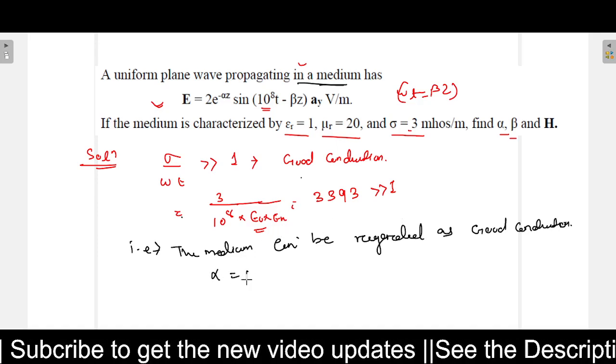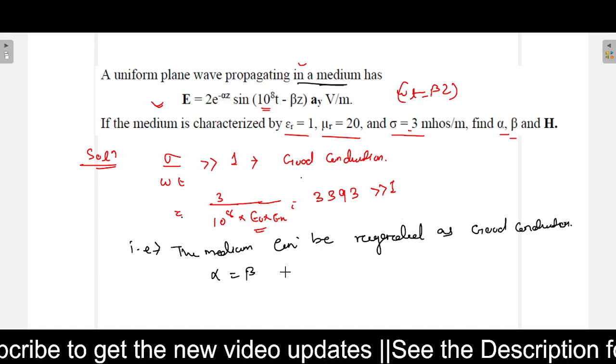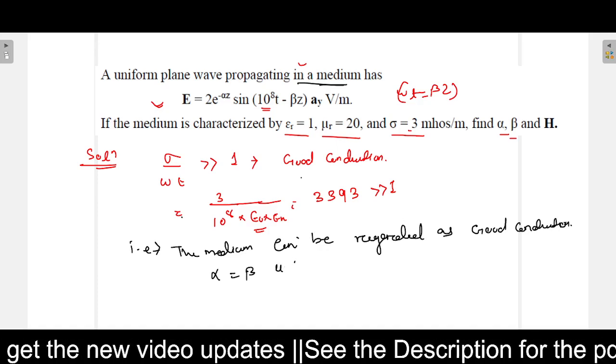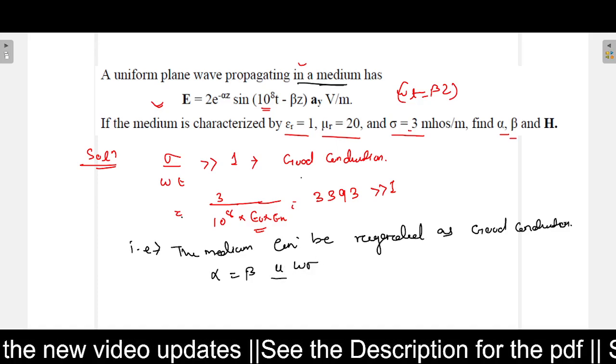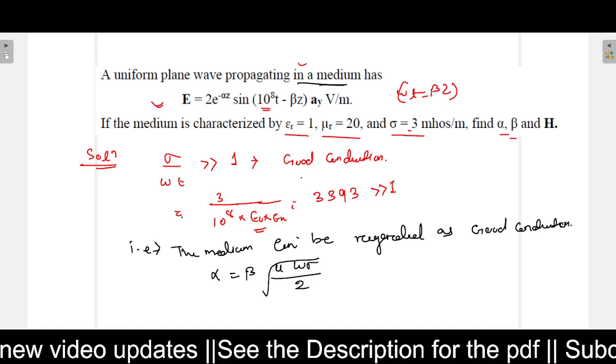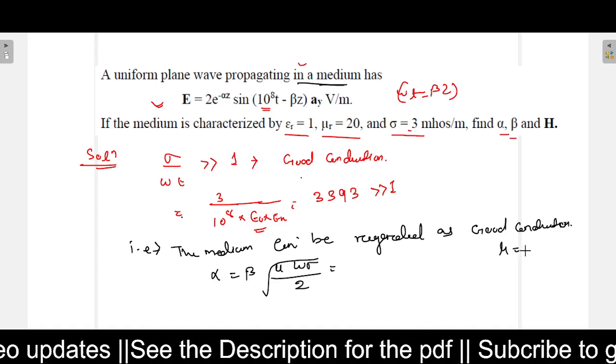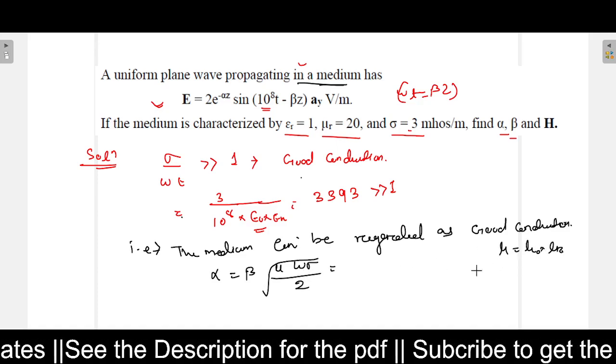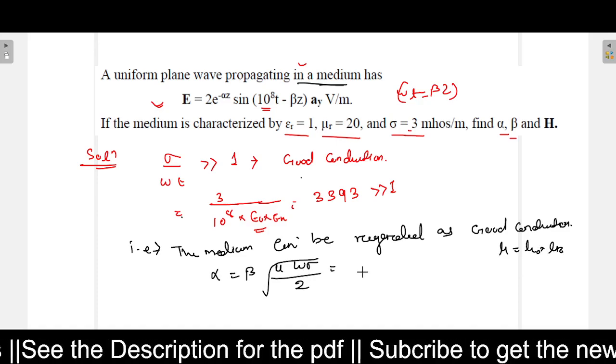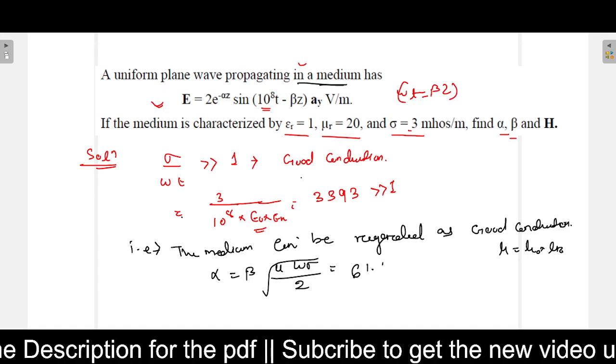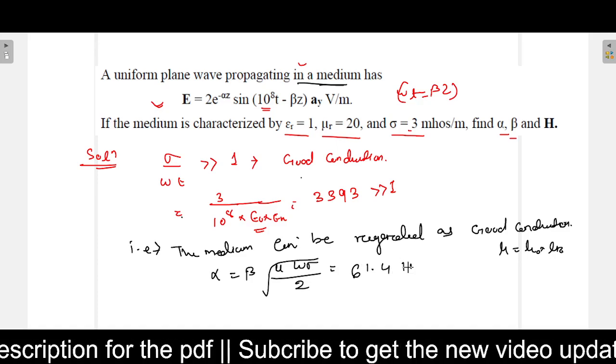Your alpha will be equals to beta, and the formula will be the same. So that equals square root of mu into omega into sigma divided by 2. And this value you can use mu equals mu_naught into mu_r. Mu_naught value you can use from calculator directly.